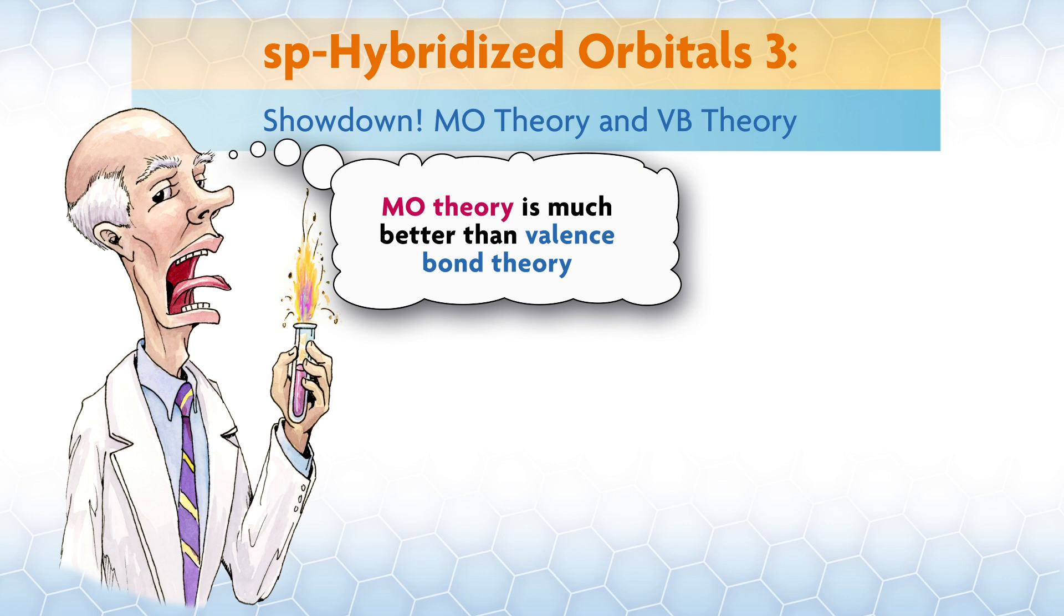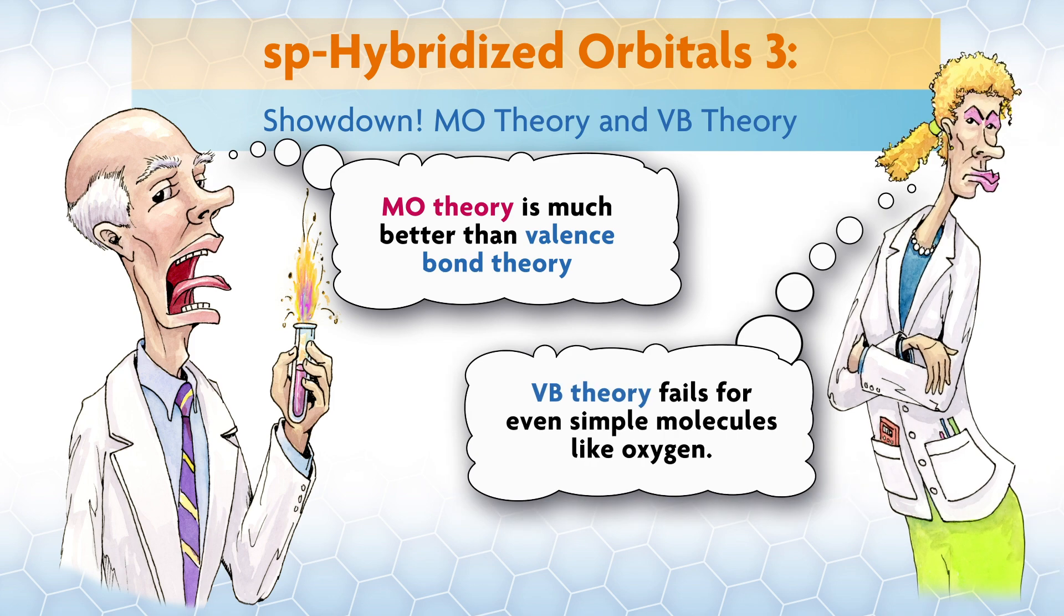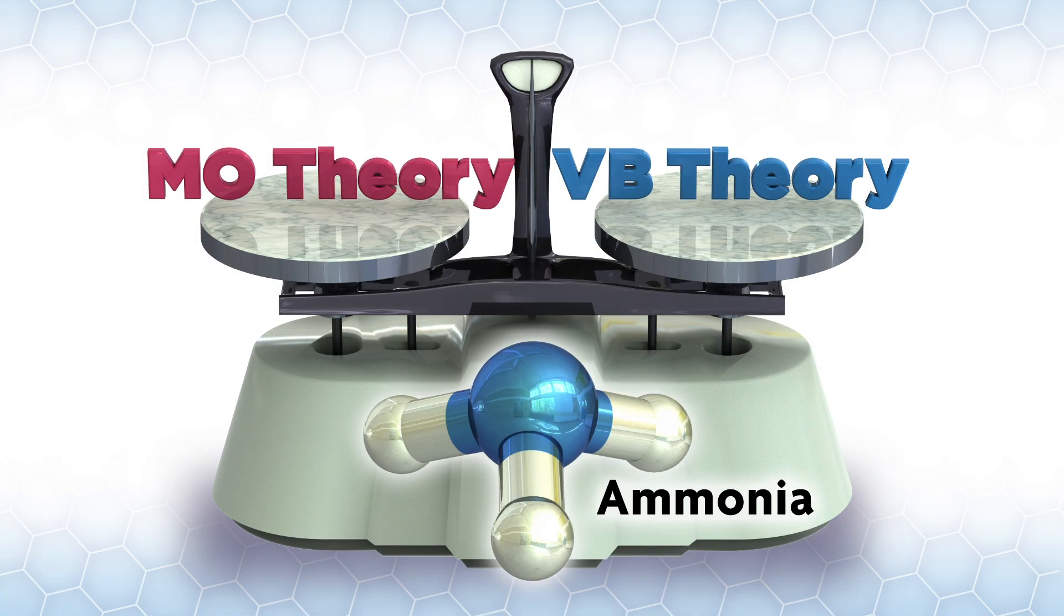Maybe you've heard it before, people saying things like MO theory is much better than valence bond theory, or maybe something like valence bond theory fails for even simple molecules like oxygen. Let's take a look at the difference between MO theory and valence bond theory. Here we'll compare MO theory and hybridization theory for a simple molecule, ammonia.